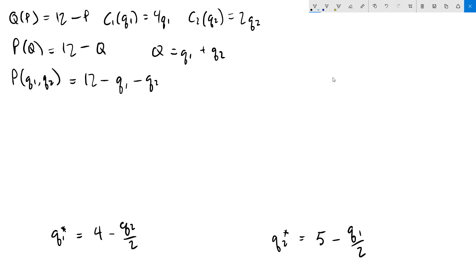For part B, we need to solve for the Nash equilibrium quantities and the market price. The best response functions give us what we need for that, a system of equations with two equations and two unknowns. So we'll use substitution to solve. I'm going to take firm 1's best response function, q1 equals 4 minus q2 over 2, and I'm going to plug in q2 from firm 2's best response function. So we'll get 5 minus q1 over 2, and have that whole thing divided by 2.